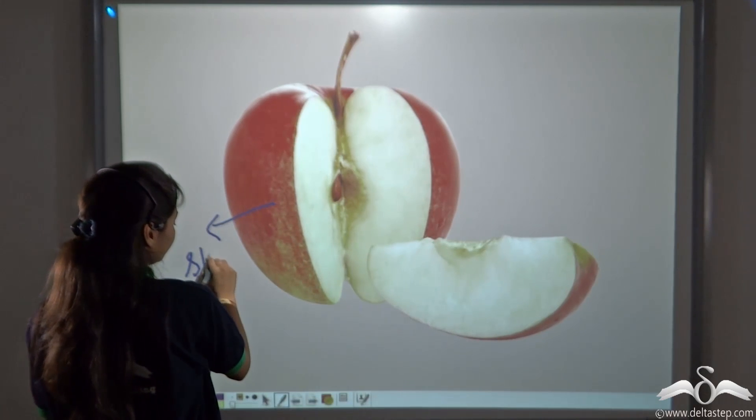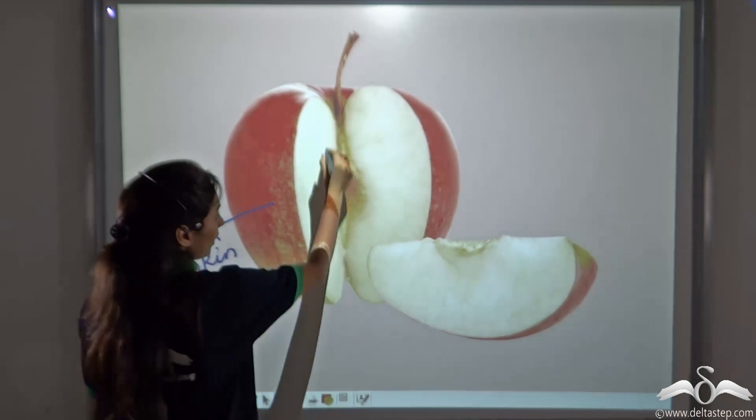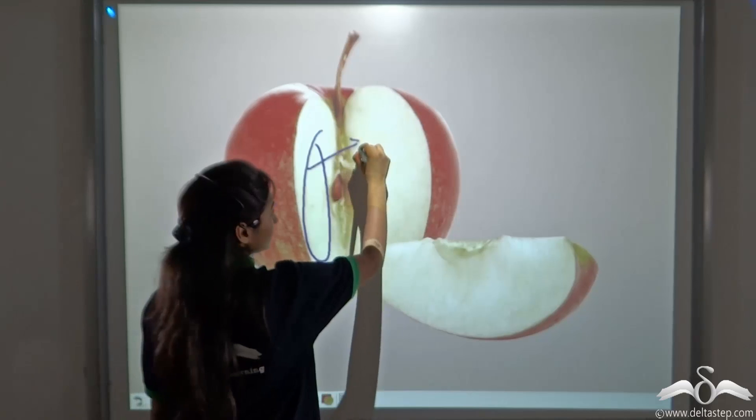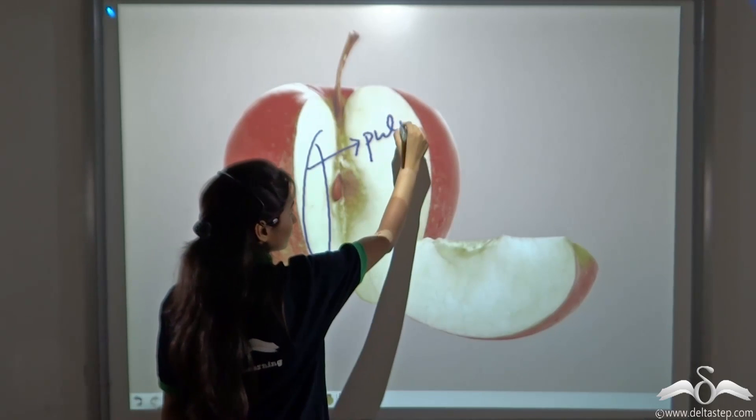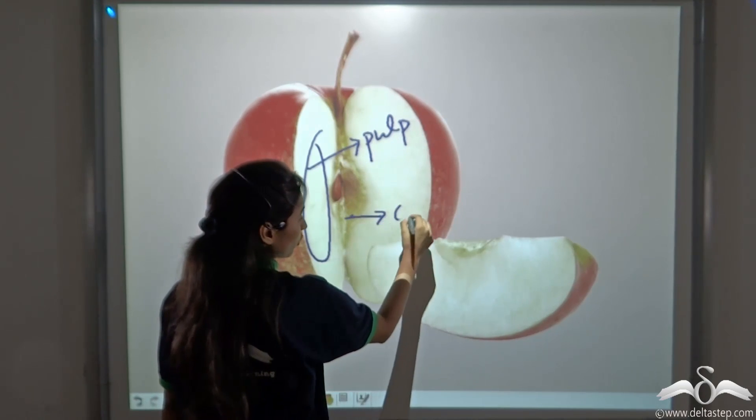This, that is the skin, then the pulp part and then the core.